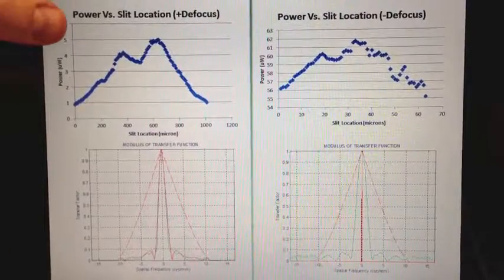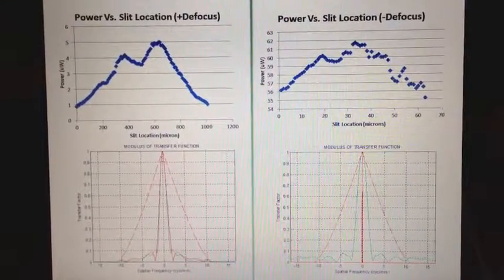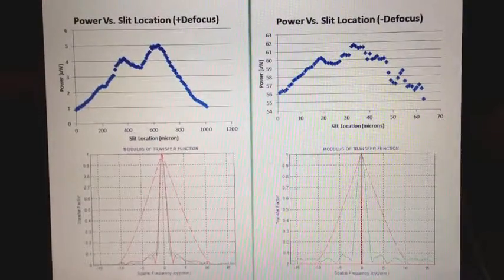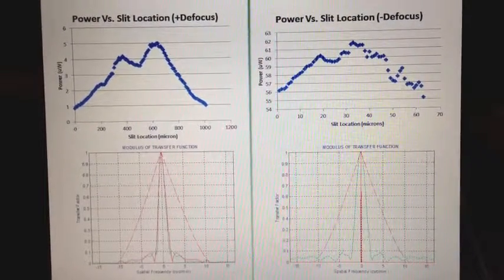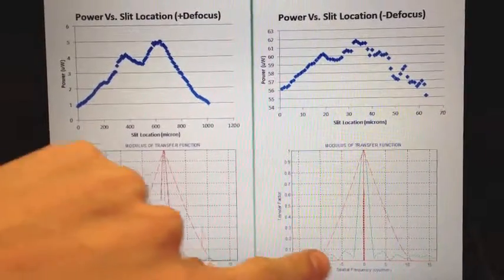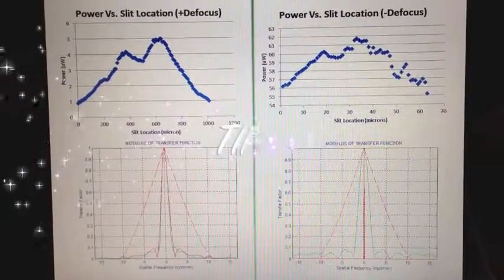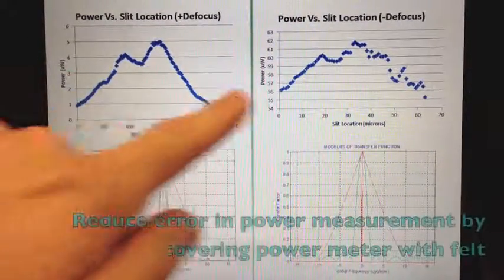You can see the center null on both plots, which corresponds to the dark spot at those locations. The MTF is significantly lower in these cases than the diffraction-limited system. Errors in our plots possibly came from non-rotationally symmetric aberrations as well as scattering.